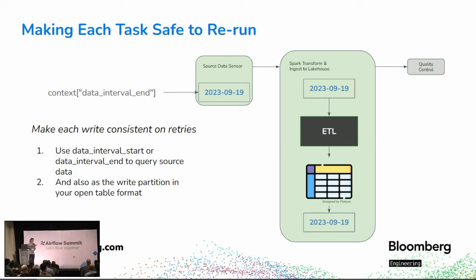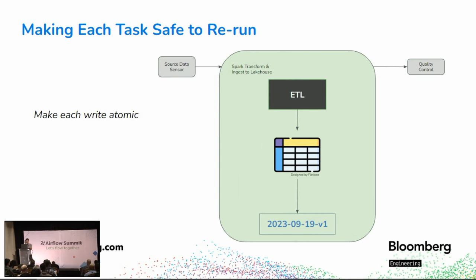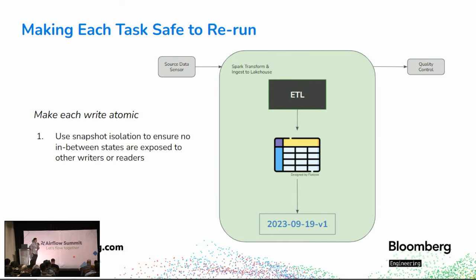Next, let's make the task atomic — which can be a challenge in big data when each write involves many different files. To behave as close to a transaction as possible: we can utilize snapshot isolation in your write operation to ensure no in-between states are exposed to other writers and readers while your task is writing to the lakehouse.